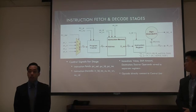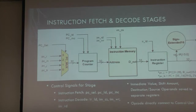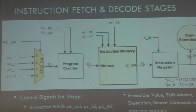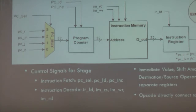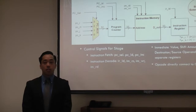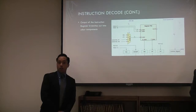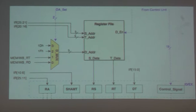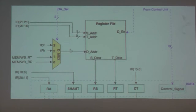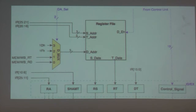The first two stages are fetch and decode. In the fetch stage, the program counter automatically increments the address location to read a certain instruction at that location in memory. During the decode stage, you receive a 32-bit output which is broken up into several fields: the S address, R address, destination address, shift amount, and either an opcode or function code, which get linked into the control unit.